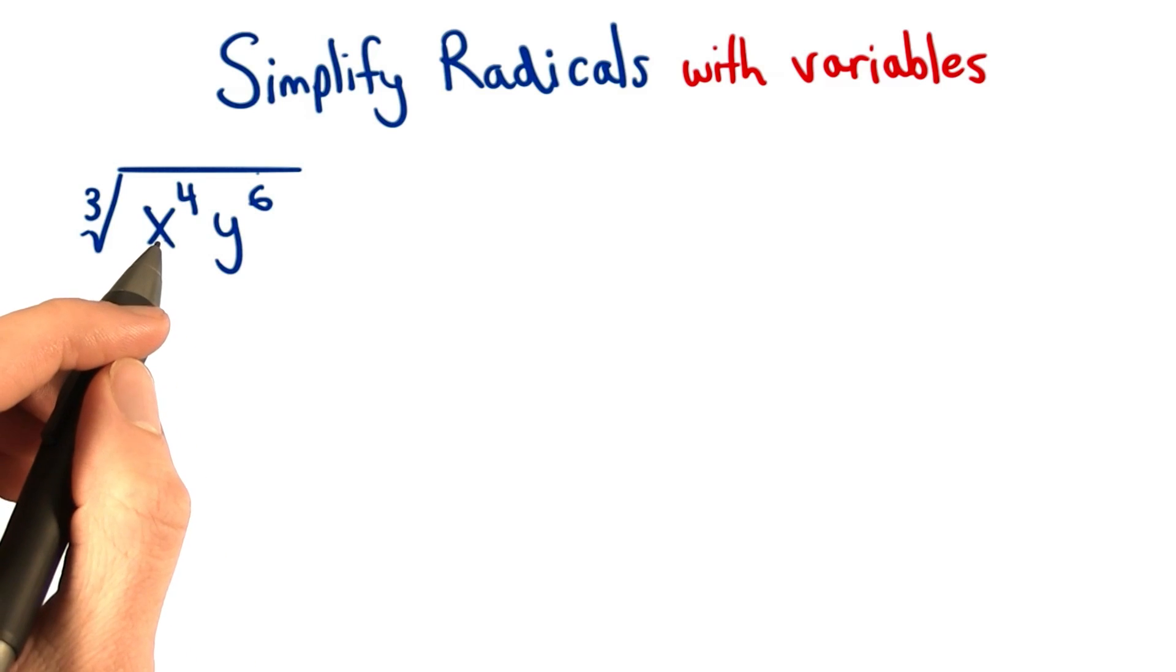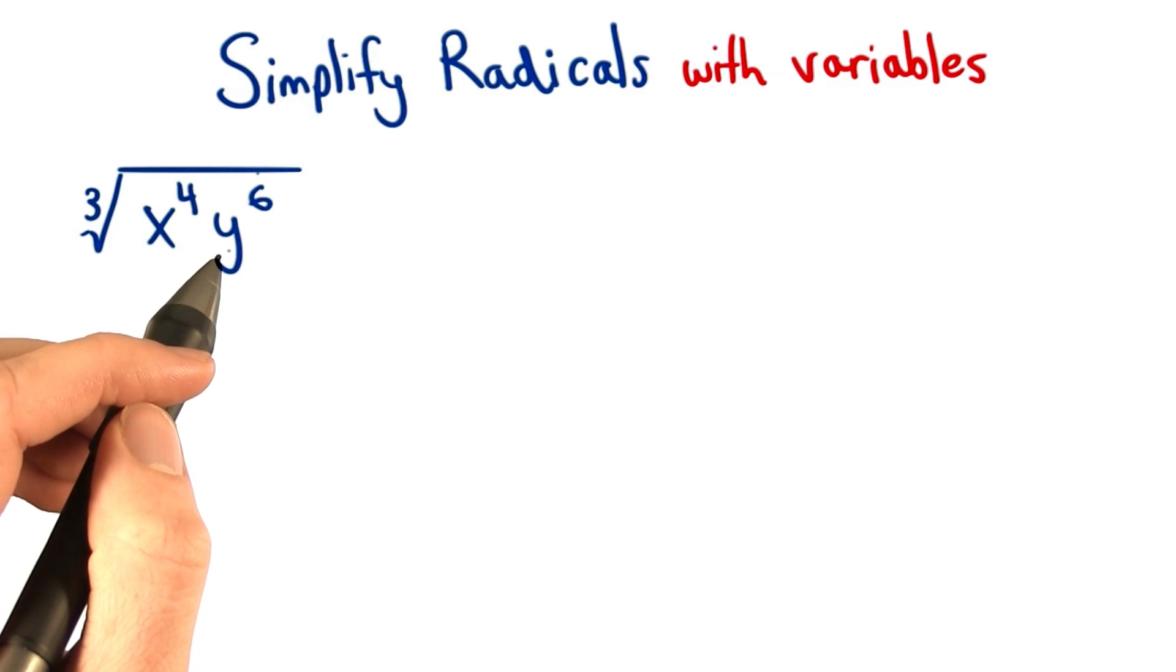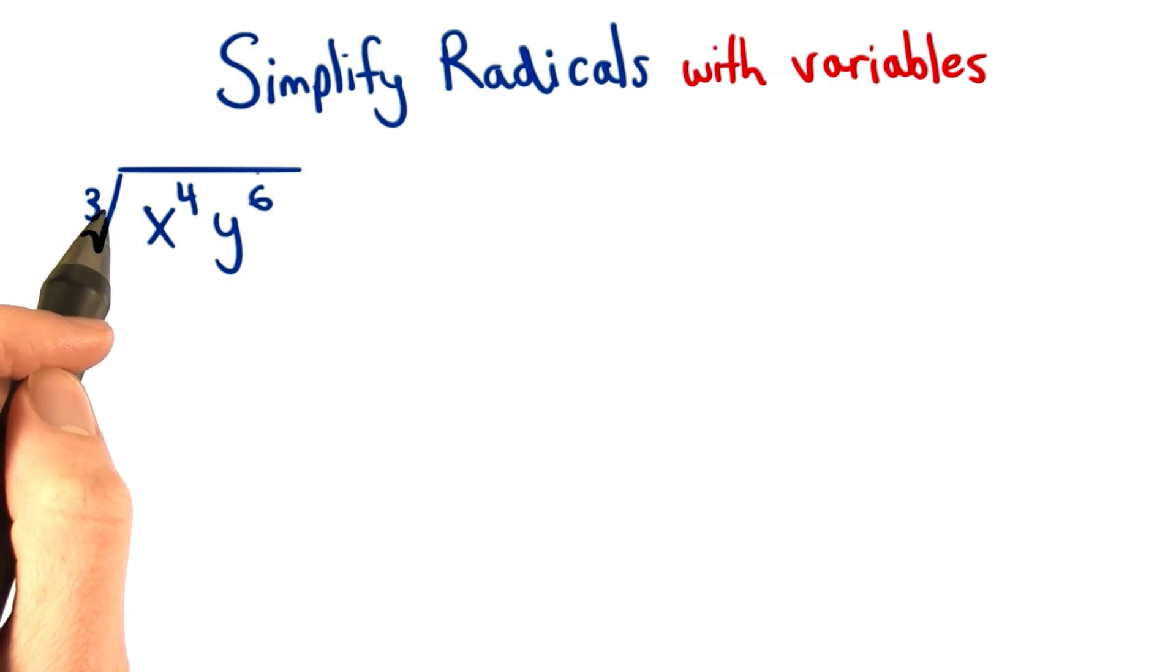Keep in mind that these variables actually represent numbers, like x could equal two, and y could be three. Our rules for these won't change. We'll still apply the product rule if we can, and we can only remove factors if they repeat three times.